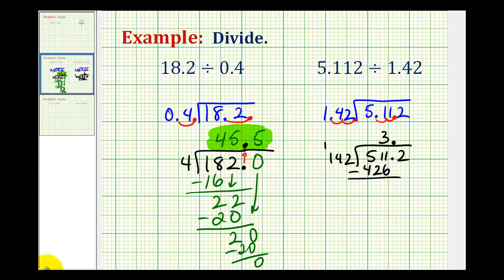And now we need to subtract. This difference is equal to 85, which is less than 142. So this 3 is correct. We'll bring down the next digit, which is the 2.